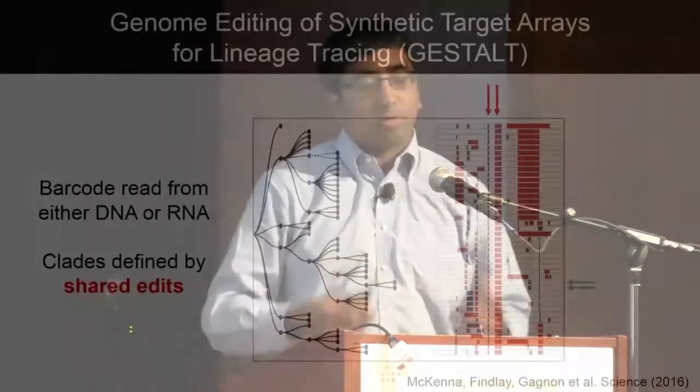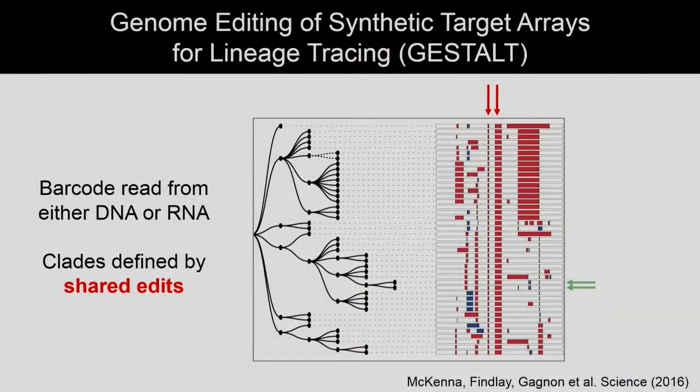If these edits are happening during development, the commonalities or sharing between edits present in different cells tells you something about their lineage relationship. For example, this entire clade of cells all share those two edits marked by the red arrows, while this pair marked by the green arrows share a different subset of edits. We can reconstruct using phylogenetics trees that should correspond to what actually happened in development.